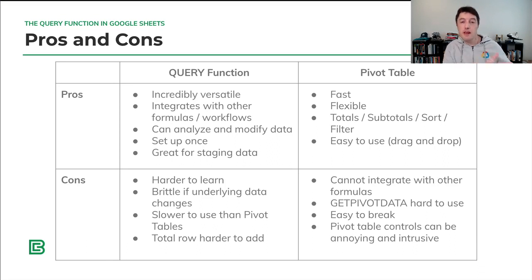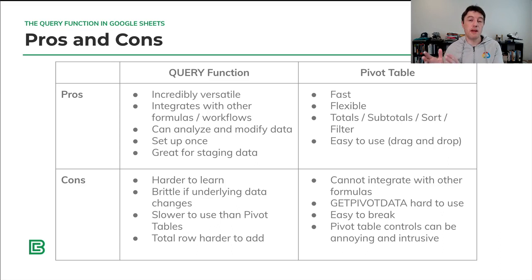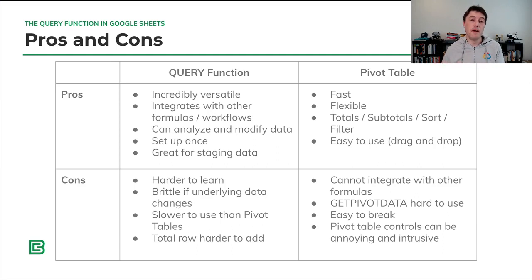Some drawbacks of the pivot table are that it doesn't work easily with other formulas — you can't easily take a pivot table and put it as an input to another function. Also, the pivot table editor that pops up when you go near a pivot table can get really annoying if you're just trying to look at the data. And it's easy to accidentally break pivot tables because they're so flexible — you can drag things around and suddenly your whole pivot table is changed and you can't remember how to get it back. Let's dive into a Google Sheet now and see some of these in action.